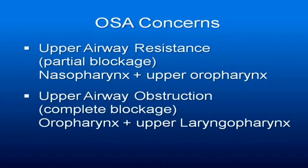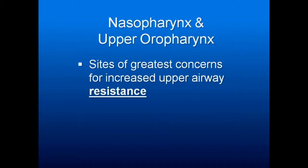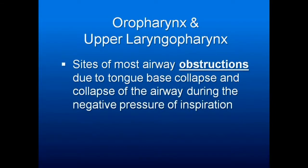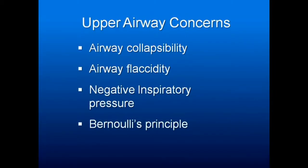So you're dealing with resistance being a little higher; the actual blockage is the tongue blocking the airway, and the airway collapses in a slightly lower region. Nasopharynx and upper oropharynx — your concern is resistance. Oropharynx and upper laryngopharynx — obstructions due to the tongue collapsing and collapse of the airway.